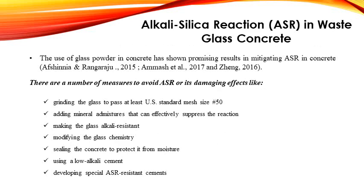Alkali-silica reaction in wasted glass concrete: glass and sand are both concentrated with silica but behave very differently. Sand has a regularly crystalline structure which makes it stable and resistant to chemical influence, while glass is an amorphous form which is not stable. The use of glass powder in concrete has shown promising results in mitigating alkali-silica reaction. Measures to avoid alkali-silica reactions include grinding the glass to pass at least U.S. standard sieve number 50, adding mineral admixtures that can suppress the reaction, making the glass alkali-resistant, modifying the glass chemistry, sealing the concrete to protect it from moisture, using a low-alkali cement, and developing special alkali-silica reaction-resistant cement.